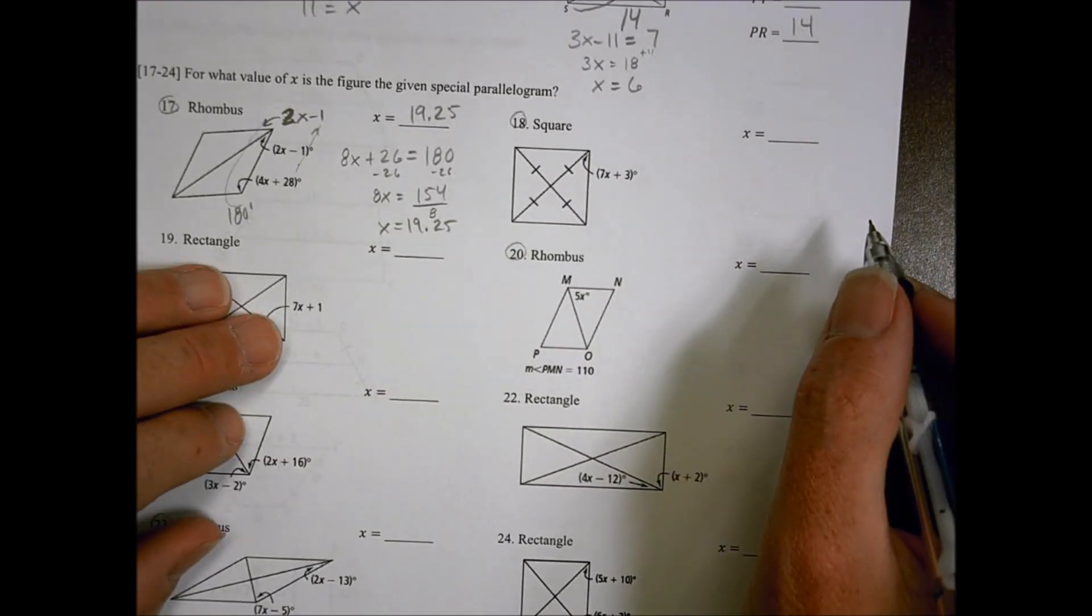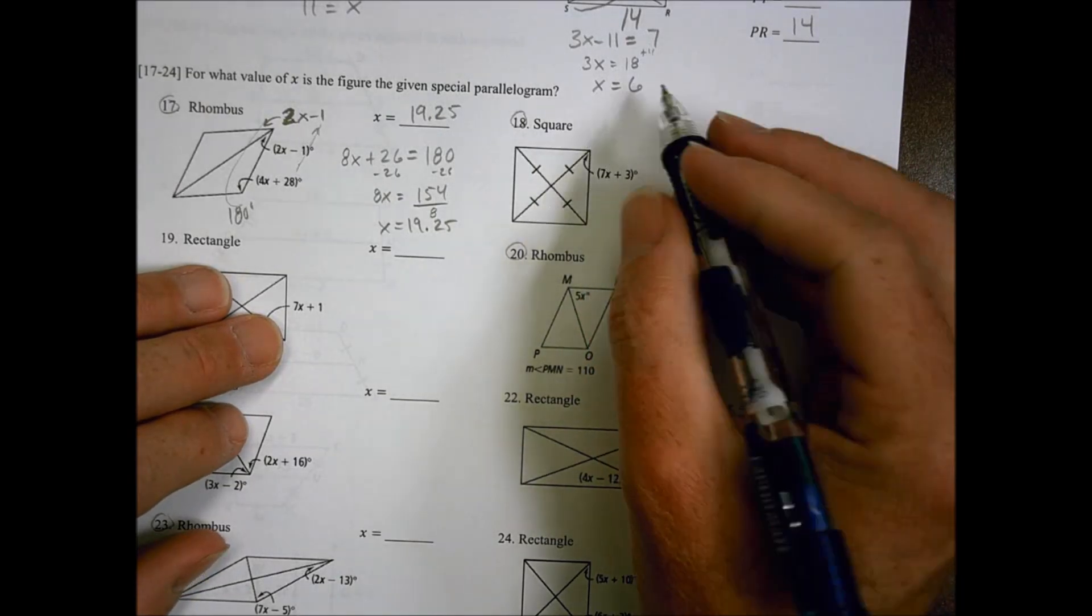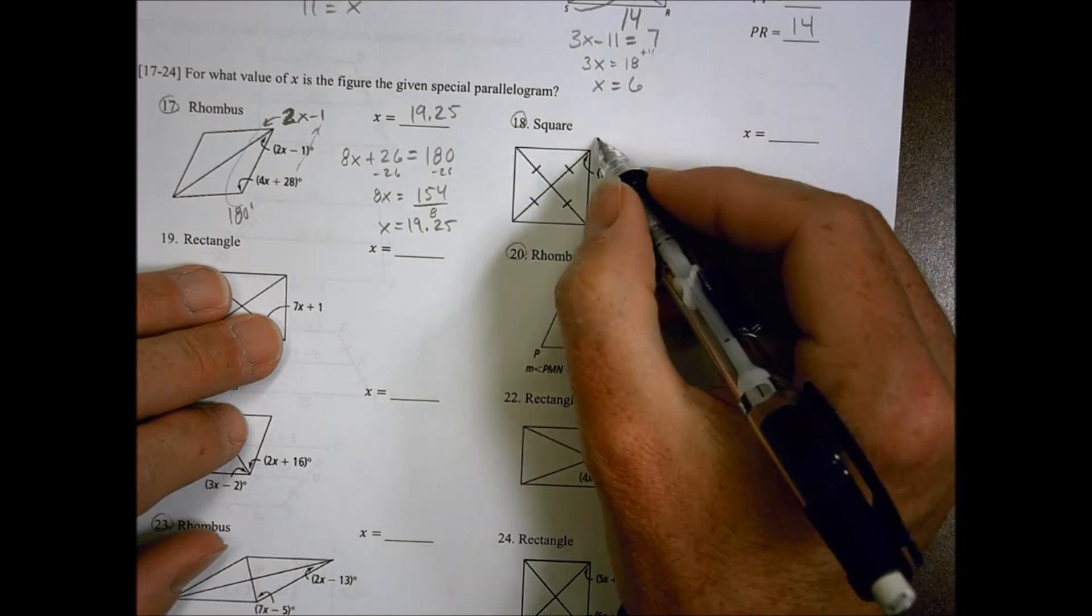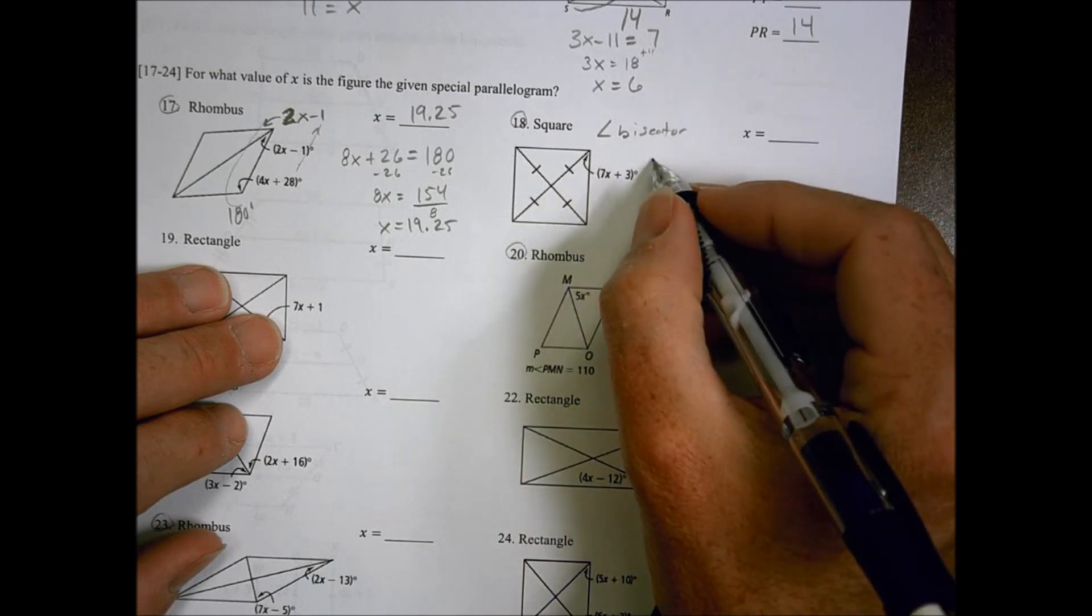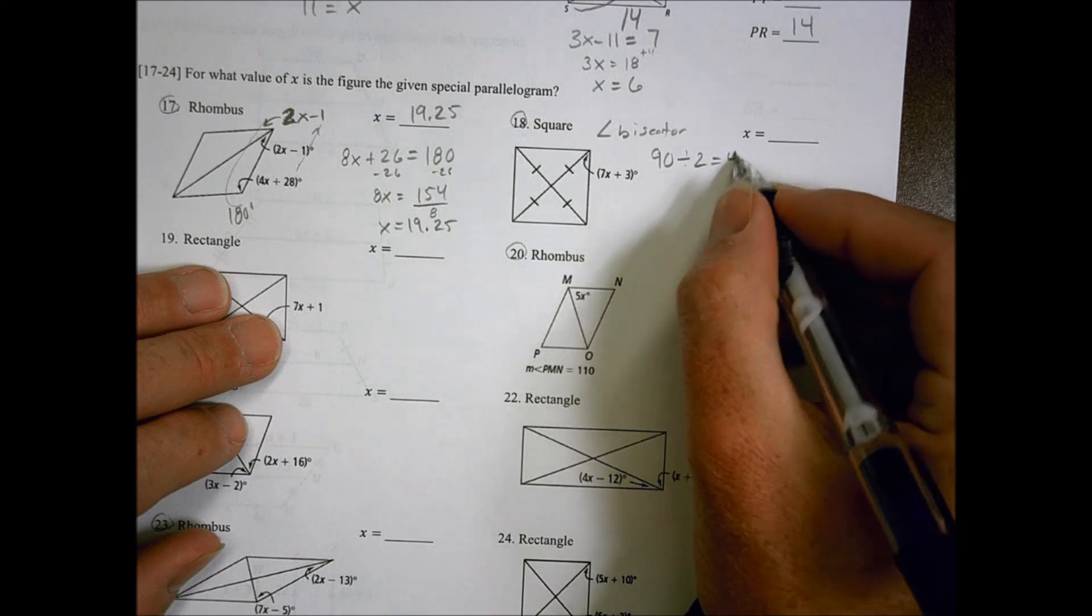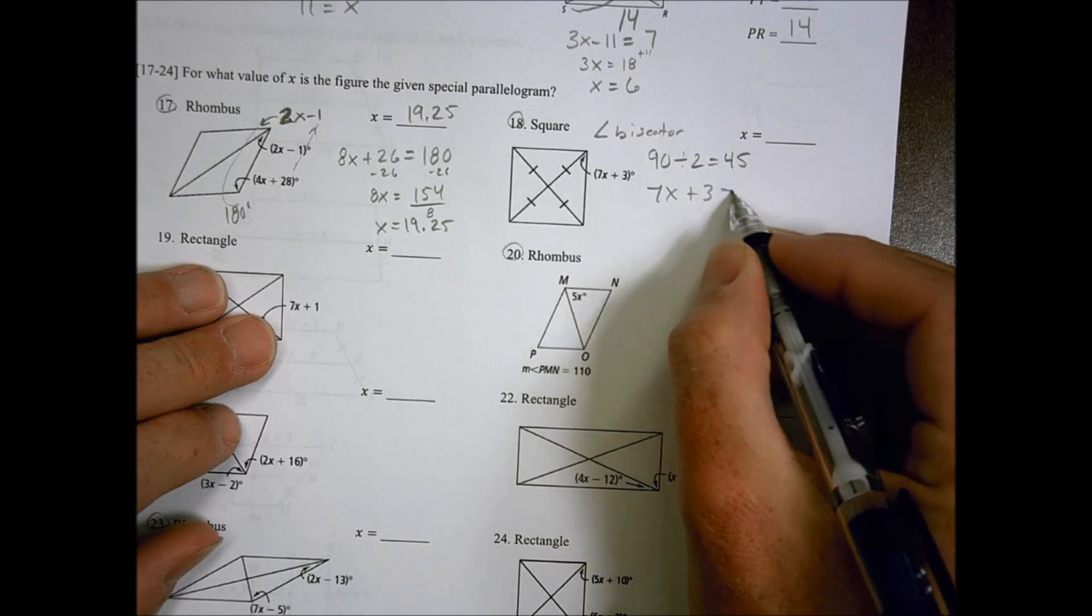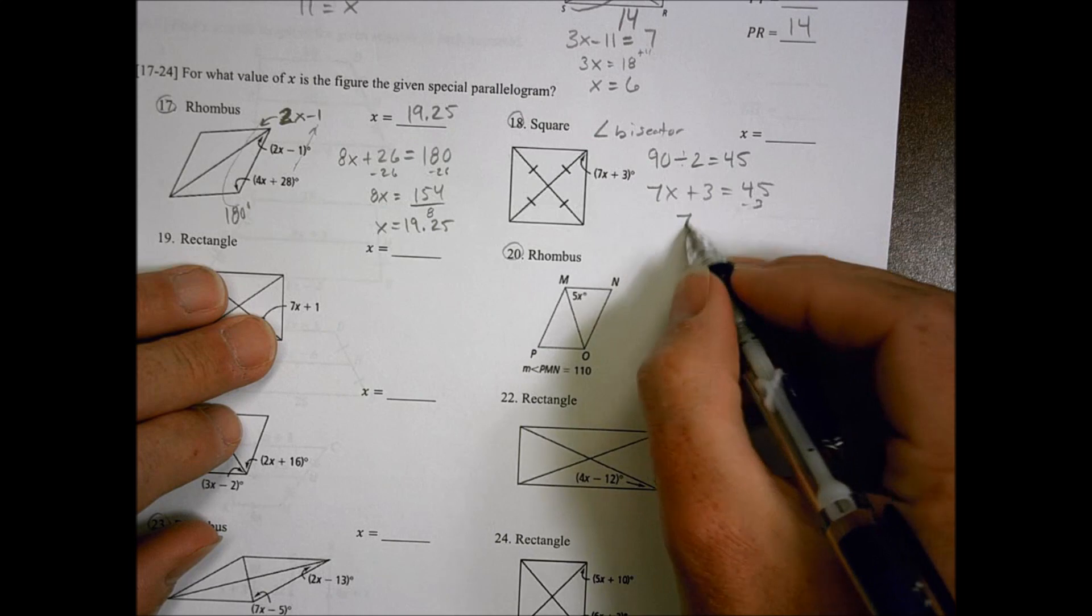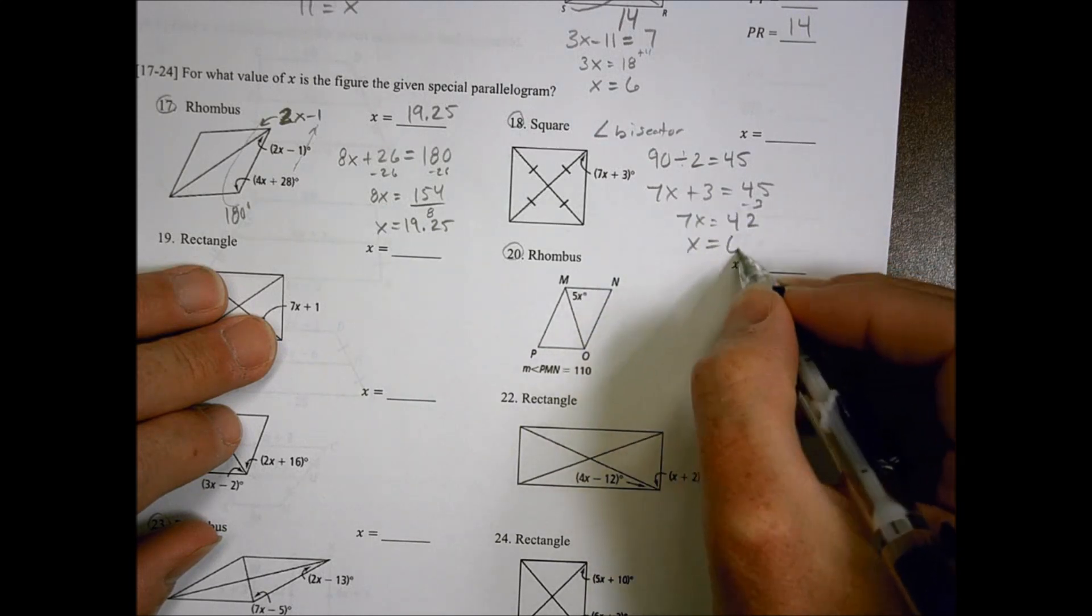Alright, number 18. This is a square. It's a square, but a square is also a special kind of rhombus. And because it's a rhombus, we're going to be cutting this apart there, which makes this an angle bisector. Now a square, it starts off at 90 degrees. If I'm bisecting it, I'm cutting it in half, which makes it equal to 45 degrees. That part there, 7X plus 3, is equal to the 45 degrees. So I'm going to subtract 3. 7X is going to equal 42, which makes X equal to 6.